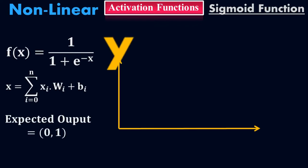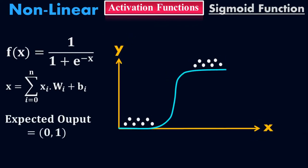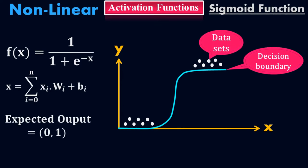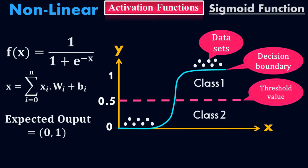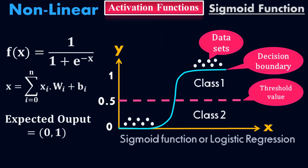According to the graph, this is a simple graph with a decision boundary and the datasets. The threshold value is 0.5. Above the threshold is class 1 and below is class 2. This is the sigmoid activation function, also known as logistic regression.